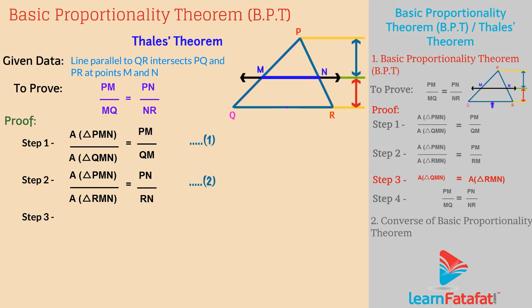Step 3: Consider triangle QMN and triangle RMN. These are triangles with a common base and equal height. That means Area of triangle QMN is equal to Area of triangle RMN. This is equation 3.